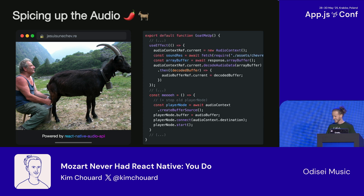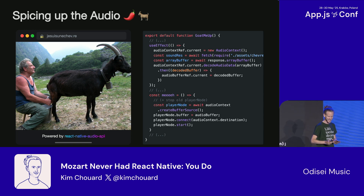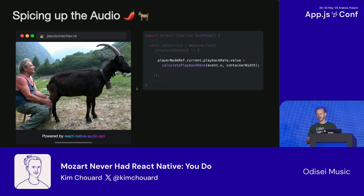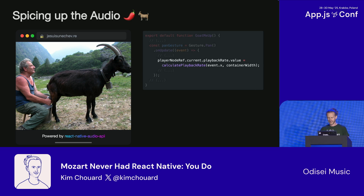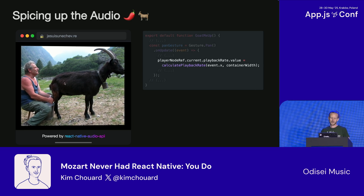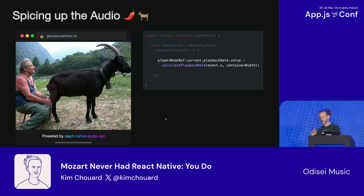Voila, we have the exact same goat example. You might be wondering why we made the code 10 times longer for the same result — bear with me. Let's continue in this direction. One idea: work on playback speed, making it play faster or slower based on where the user is. Voila — we start to get some fun.